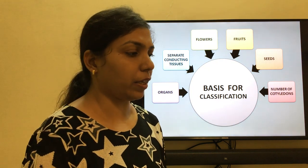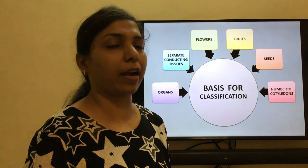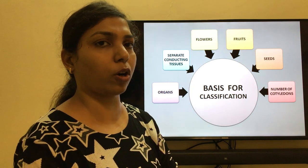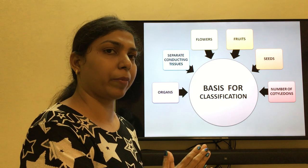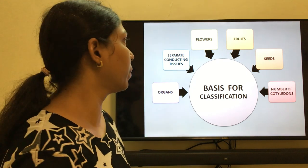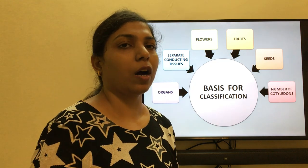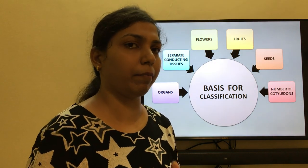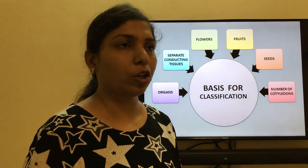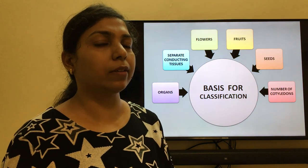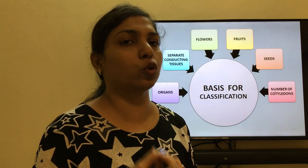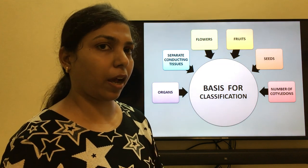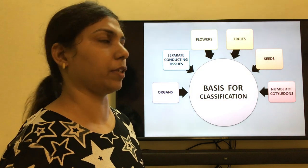The first property is organs. We look at whether the plant has roots, stem, leaves, and flowers — are all these organs present or not? If they are present, they are categorized under one particular category; if not, under another. The second property is separate conducting tissues. You have heard about xylem and phloem — two types of tissues present in plants. Xylem is required for the plant to absorb water, and phloem is required for the plant to absorb food materials and nutrition. If xylem and phloem are not present, the plant falls into a different category.